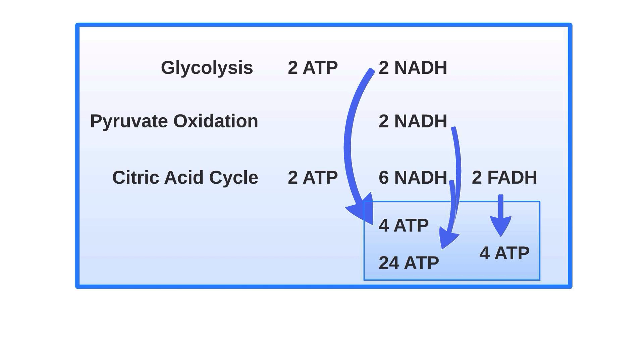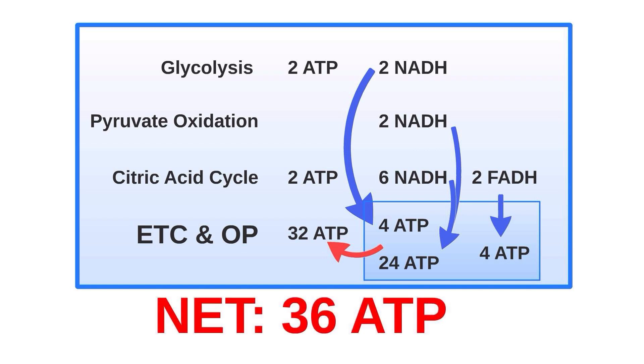Overall, including the previous ATP from glycolysis and the citric acid cycle, the entire metabolism of one glucose molecule produces a net of 36 ATP. Well, that was a brief review of oxidative phosphorylation and an overview of ATP production. I hope you enjoyed this video.